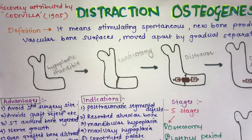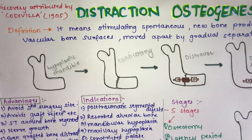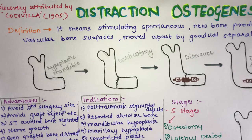One option to treat bone deficiency is the use of bone grafts — a material used to increase the size or width of bone. However, there are various disadvantages: we need two surgical sites (one recipient, one donor), there are chances the body will reject the graft, or it will lead to morbidity of the donor site. Because of these limitations, a technique known as distraction osteogenesis was introduced.